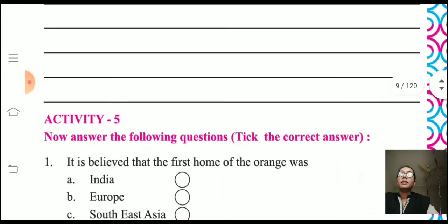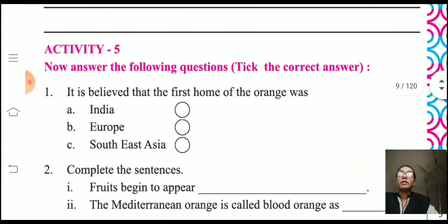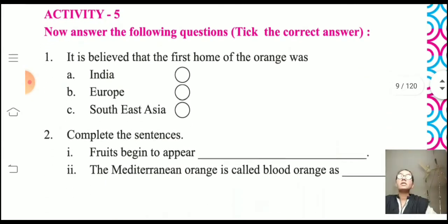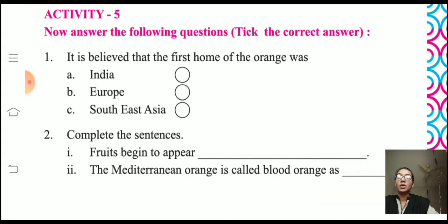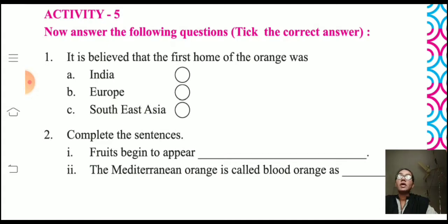Now we are going through Activity Number Five: answer the following questions with the correct answer. First one — it is believed that the first home of the orange was: A) India, B) Europe, or C) Southeast Asia. The correct answer is Southeast Asia.